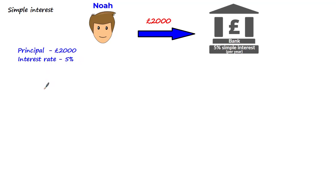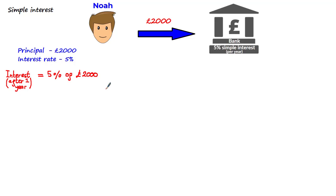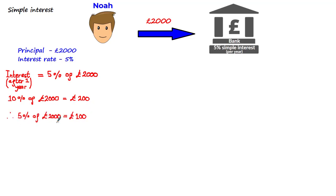Now, assuming we wanted to calculate Noah's interest after the first year, a way we could do this is by taking 5% — the interest rate — of £2,000, the principal amount. We can do this without a calculator: if 10% of £2,000 is £200, then 5% of £2,000 is £100, which is half of £200. So the interest that Noah makes after the first year is £100.